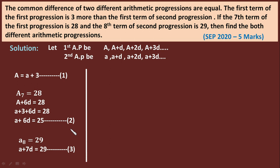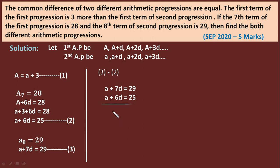Now we solve equations 2 and 3 by subtraction. Equation 3: a + 7d = 29. Equation 2: a + 6d = 25. Subtracting equation 2 from equation 3, the a terms cancel, and 7d − 6d gives d = 29 − 25 = 4. So the common difference d = 4, and this is the same for both arithmetic progressions.